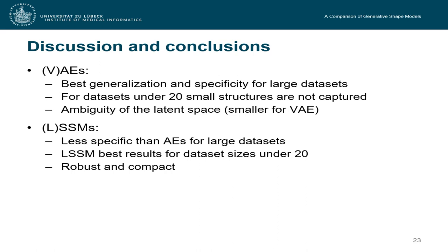However, for smaller datasets, the conventional shape models, especially the locality-based shape models, were much more robust. And also, we saw that their latent space is much more compact and easier to interpret.